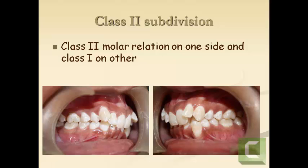However, this is not a proper class 2 division 2 — it is a class 2 division 2 subdivision. A class 2 subdivision malocclusion is one where you have a class 2 molar relationship on one side and a class 1 on the other. In this case, the right side has a class 2 molar relationship and the left side has a class 1 molar relationship, but the incisors present as class 2 division 2.